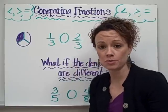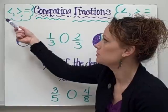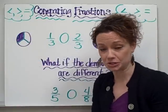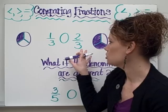Now we know whenever we're comparing two numbers or two fractions or two of anything, we're going to be using our mathematical symbols: greater than, less than, or equal to. So let's take a look at this first example. One third compared to two thirds.